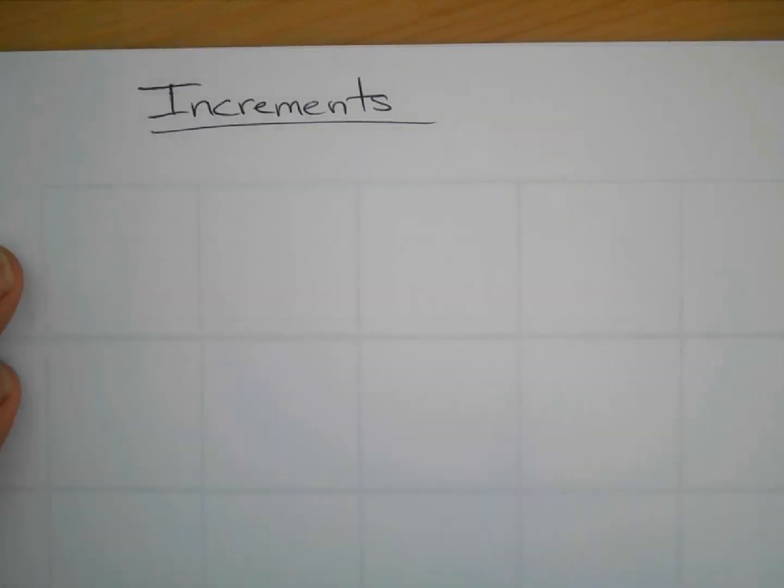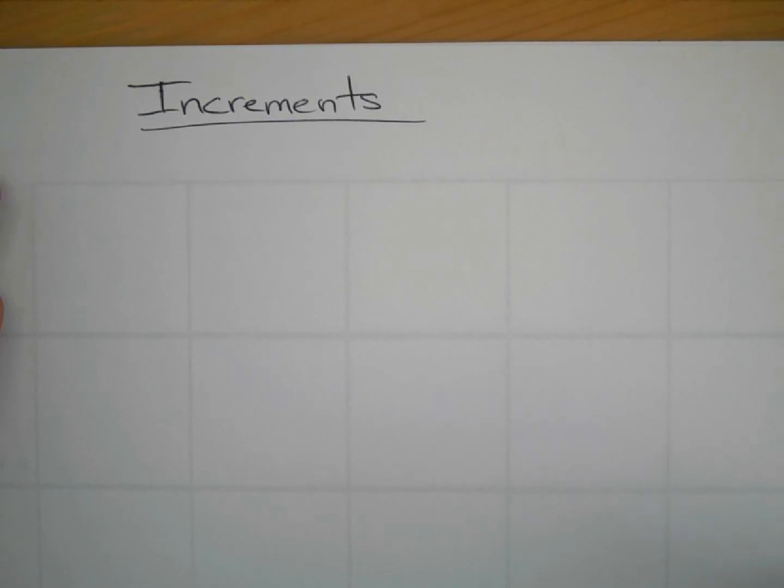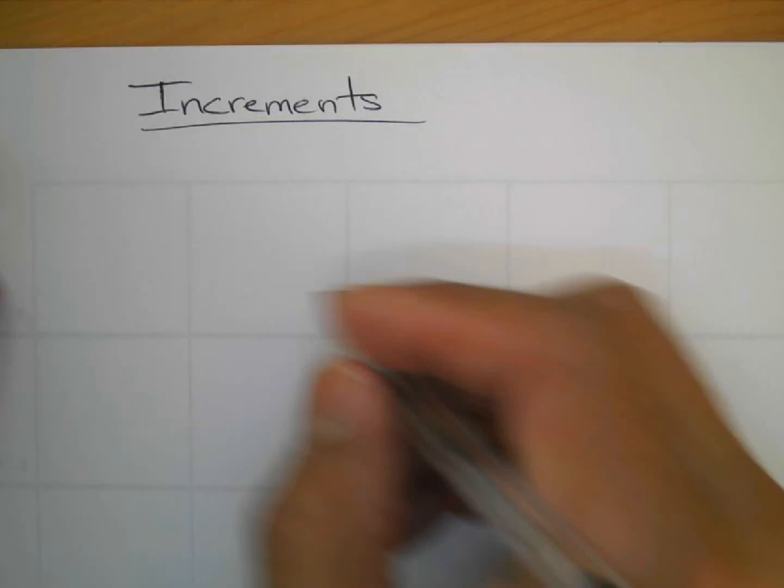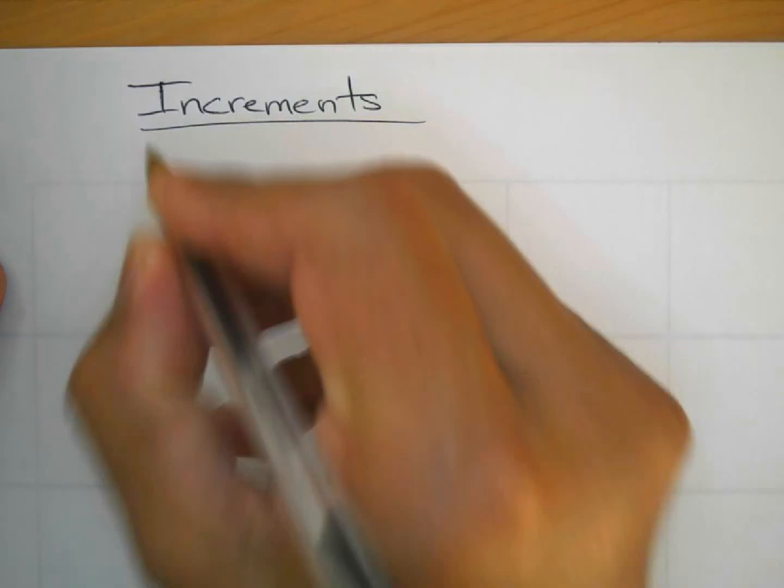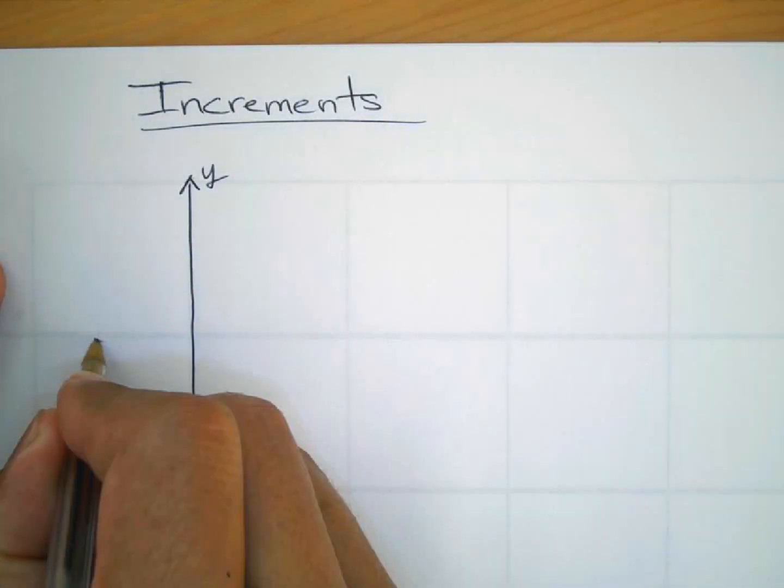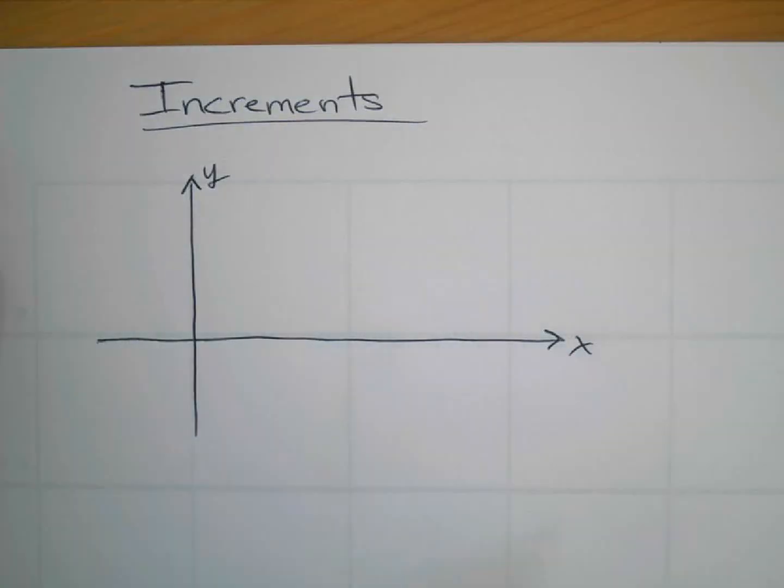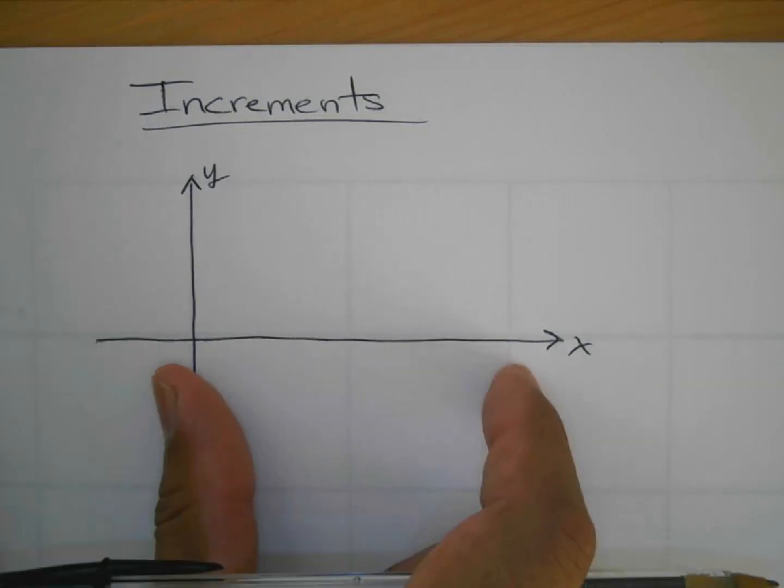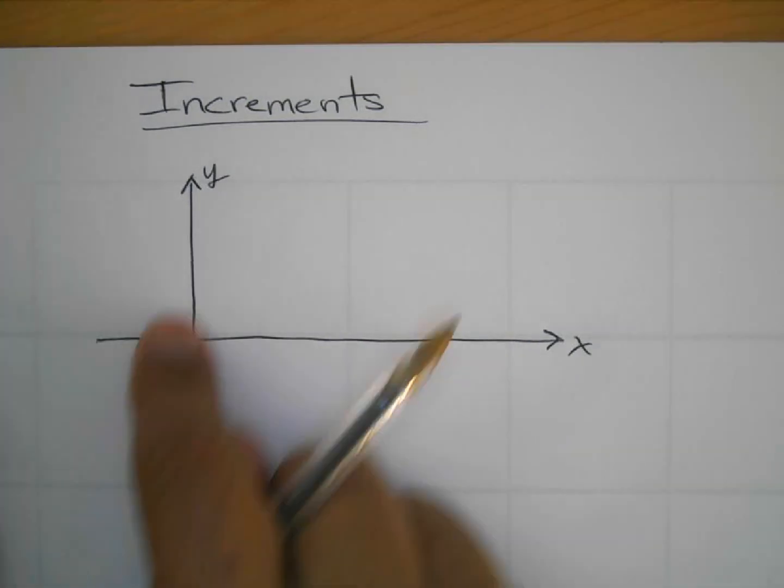The way I teach it is you're going to have your y-axis, you're going to have your x-axis, right? And what I'm going to do is I'm going to break it up into four increments so that you're able to graph one cycle or one period.